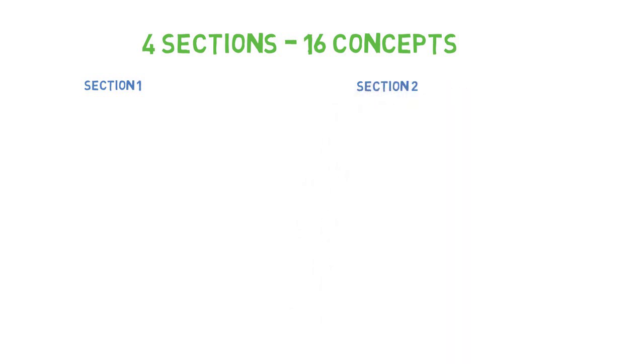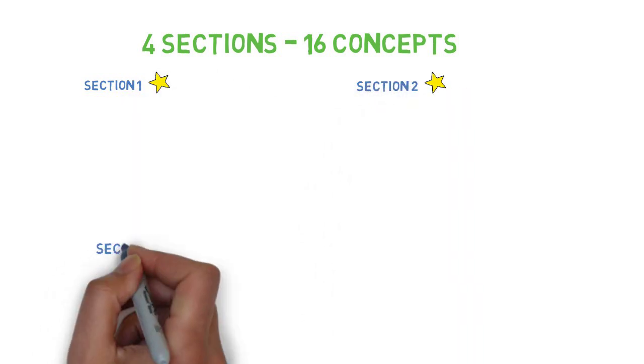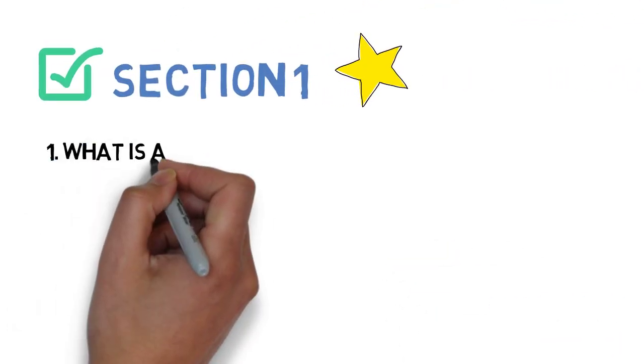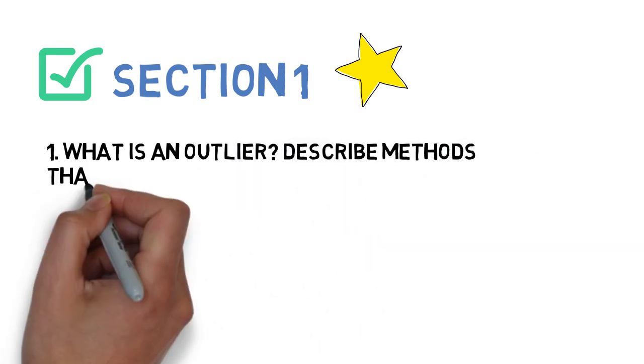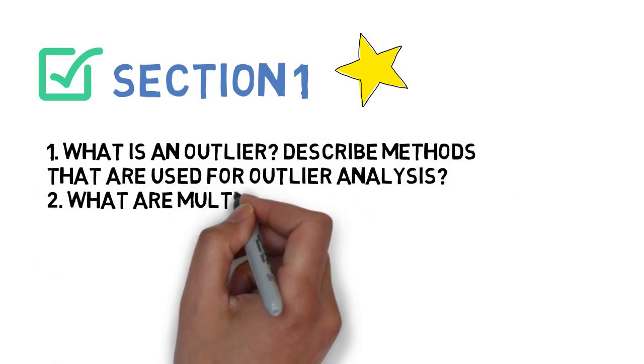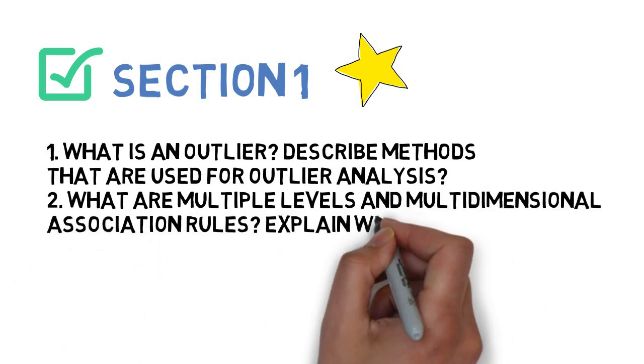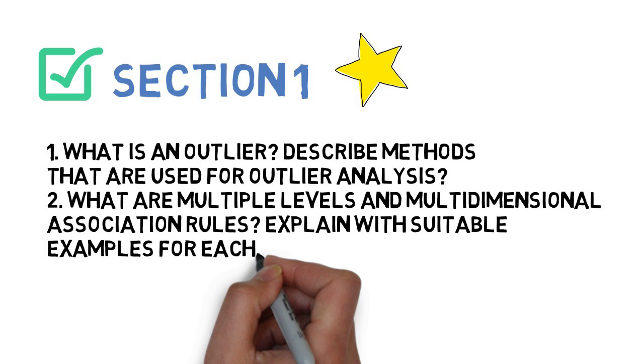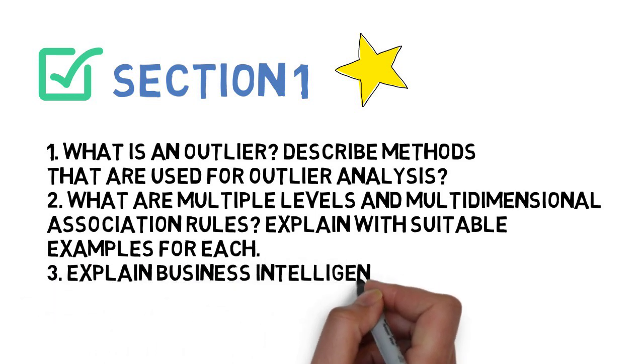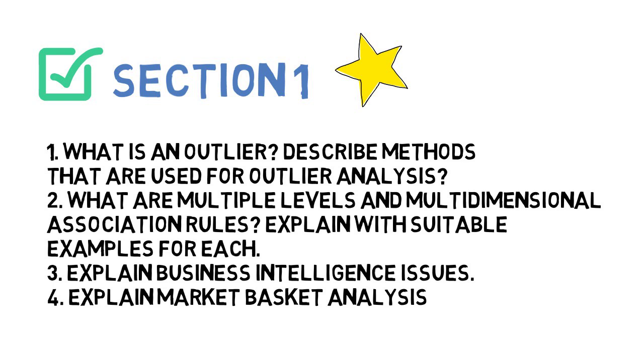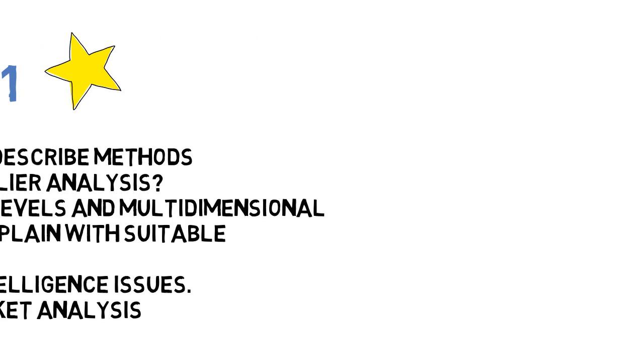Section 1 and Section 2 are very important, so make sure you prepare them very well, followed by Section 3 and Section 4. In the first section we'll do 4 questions: What is an outlier and describe methods used for outlier analysis; What are multi-level and multi-dimensional association rules with examples; Explain business intelligence issues; and Explain market basket analysis.